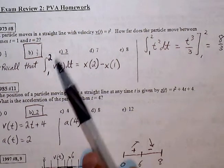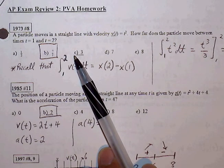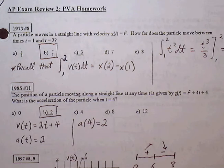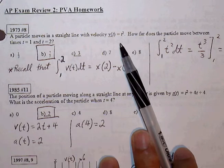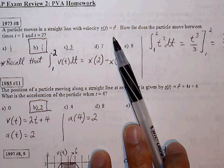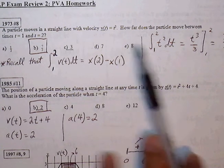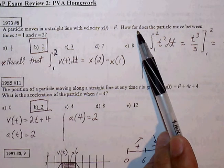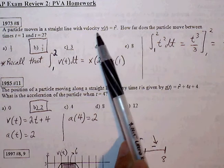Let's look at the PVA homework from AP exam review 2. This is 1973 number 8. A particle moves in a straight line with velocity v of t equals t squared. How far does the particle move between the times t equals 1 and t equals 2? So we're trying to find out how far, or in other words, how much distance is covered given our velocity function.